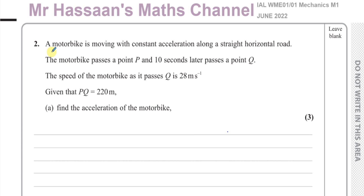Here we have a question about a motorbike which is moving with constant acceleration — important word, constant acceleration — along a straight horizontal road. The motorbike passes a point P, and 10 seconds later passes a point Q. The speed of the motorbike as it passes Q is 28 meters per second. Given that PQ is equal to 220 meters, find the acceleration of the motorbike.